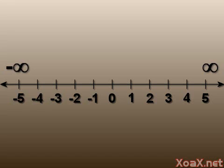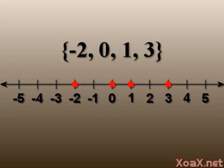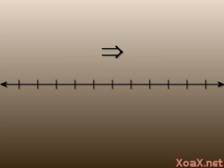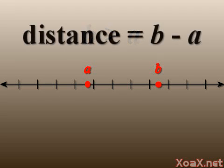Here we use negative and positive infinity to mean real numbers that are as small or as large as we would like to make them. Using the real number line we can plot numbers with dots, like this for three, or this for negative one. We can even plot sets of numbers on the number line. The numbers on the number line decrease to the left and increase to the right. If we have two numbers plotted on the number line, the larger number is the one on the right.